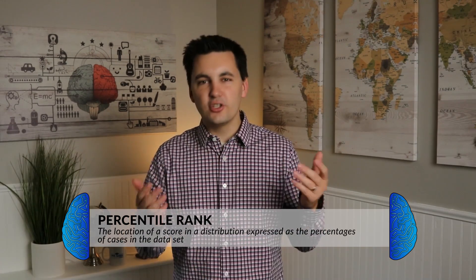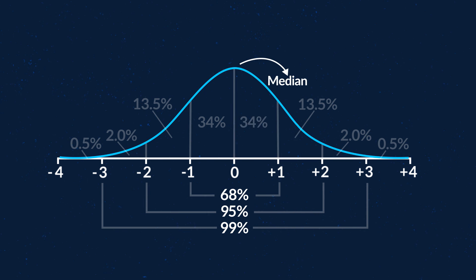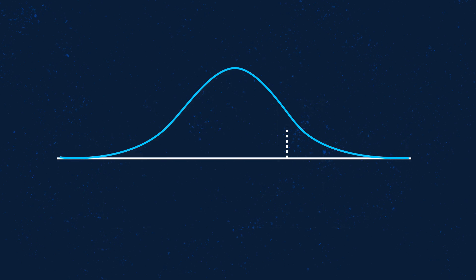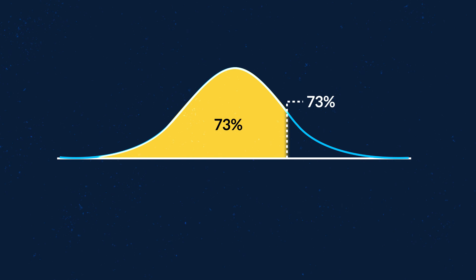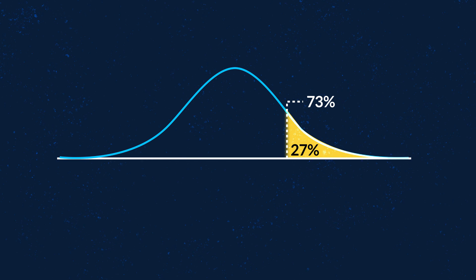Next, remember percentile rank — this is the percentage of scores at or below a particular score. Essentially, this tells you what percentage of the population has a score or value that's the same or lower than yours. Remember that the median is the 50th percentile, with half the data above and half below. For example, if you're in the 73rd percentile for height, 73% of people your age have heights less than or equal to yours, and 27% have the same height or are taller than you.